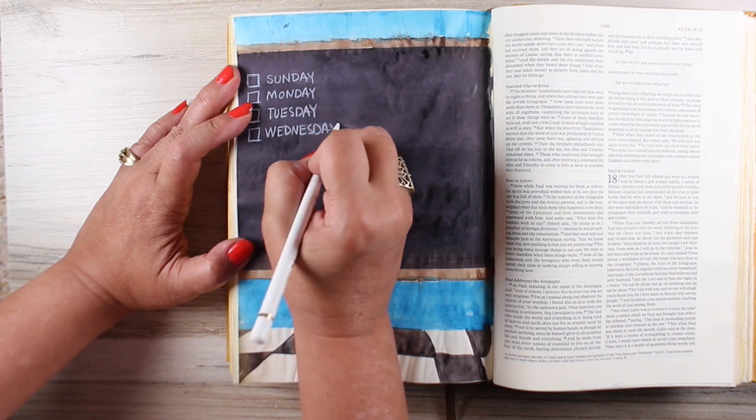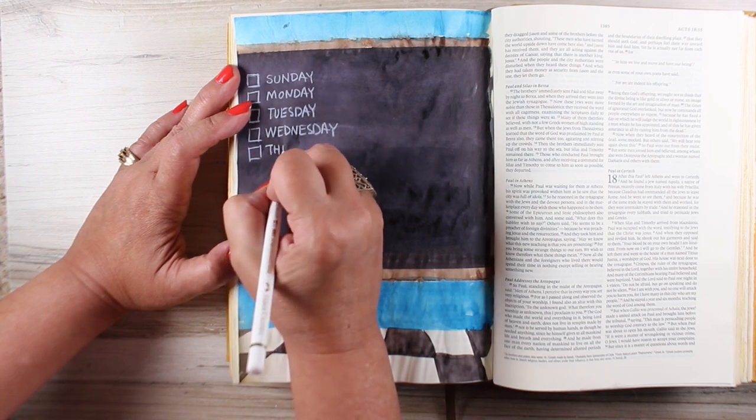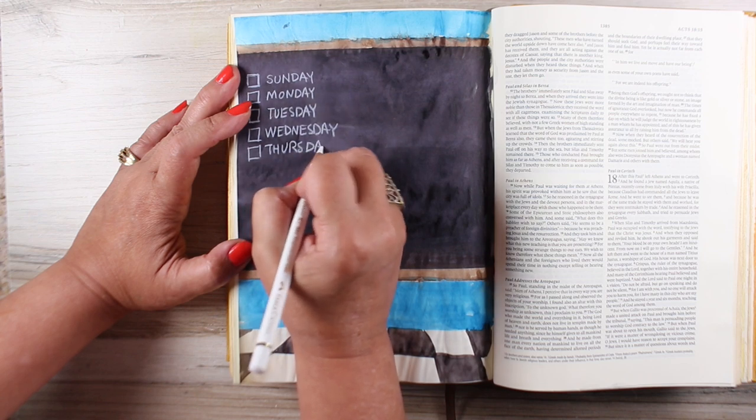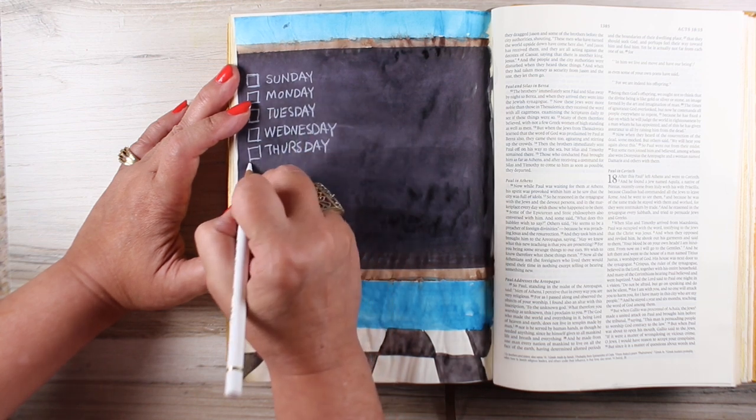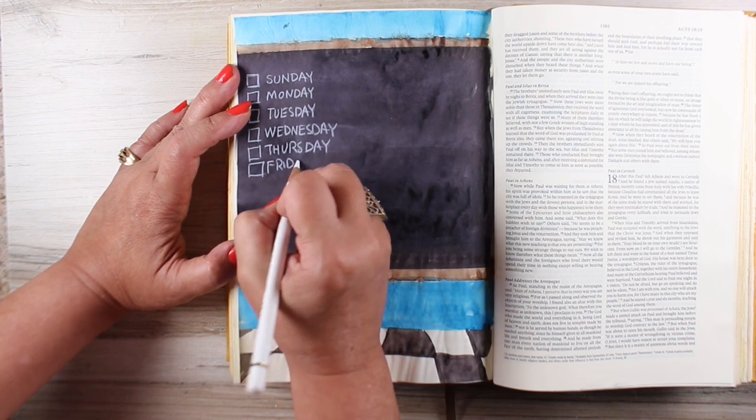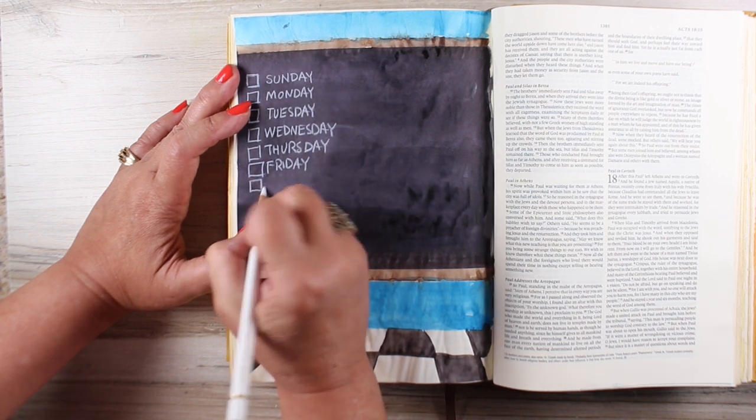And what I decided since it's all about searching the scriptures every day, I wrote the days of the week on there with little check boxes. You can use this kind of a technique for a lot of different verses in which the teaching, you just imagine someone standing in the front of the room and teaching the scripture that you've just read. What would they write on the board? What example would they use?